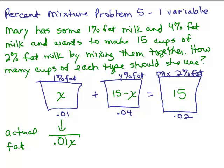So in other words, if you extracted it down and you were able to just get the fat in a cup, it would have 0.01x in there. Now the fat in here would be 4% of how many cups I have in this vat. So that would be 0.04 times 15 minus x.